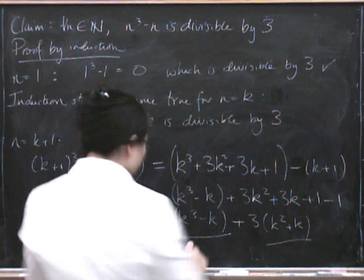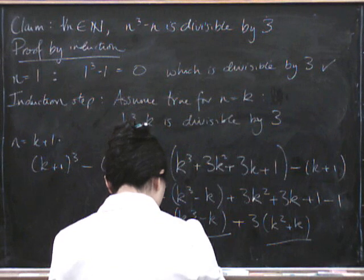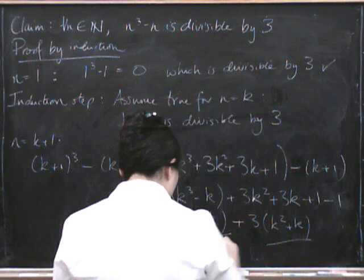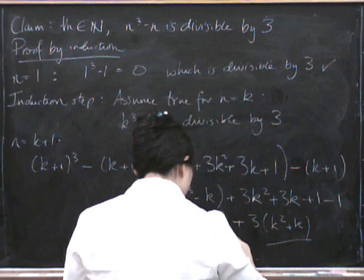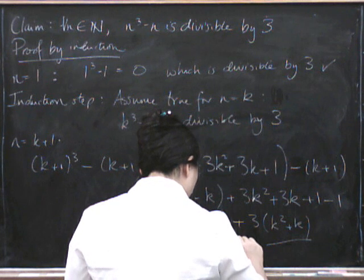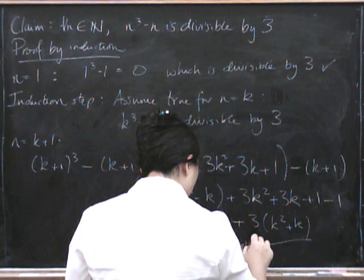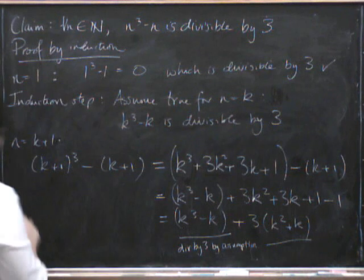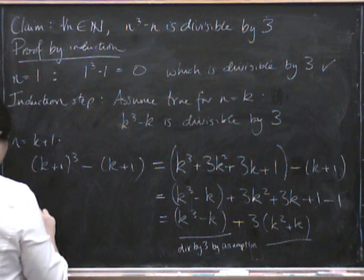So it's true. So this bit is divisible by 3 by assumption. So the whole thing is true. So the result is true.